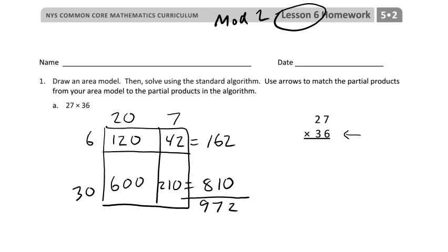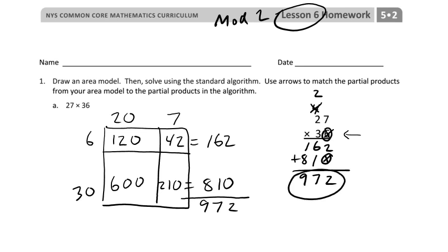Now let's do the algorithm and see if it matches. Starting with 6: 6 times 7 is 42, carry the 4; then 2 times 6 is 12 plus 4 is 16. I put an X or 0 as a placeholder. Now multiplying everything by 3: 7 times 3 is 21, put a 1, carry the 2; 2 times 3 is 6 plus 2 is 8. Adding up gives 972. The 162 and 810 from the area model match perfectly. We usually put the larger number on top but the area model must be set up the same way as the algorithm.